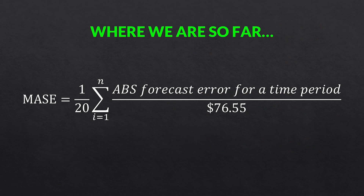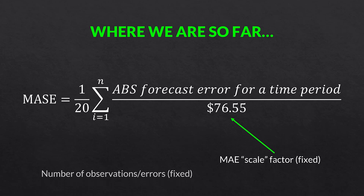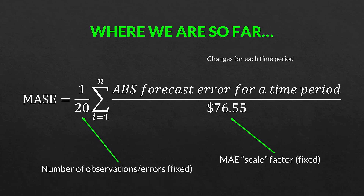There are two steps for MASE. The first is the denominator itself — the MAE of the naive forecast — which we've already done in this playlist. We found the mean absolute error for this data was $76.55. That is our denominator going forward. We have 20 observations, so that's where the one over 20 comes from on the left. The $76.55 stays the same for each iteration. The only thing that changes is the absolute forecast error for an individual time period.